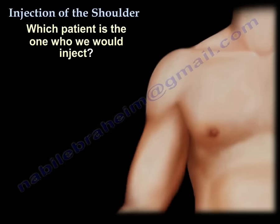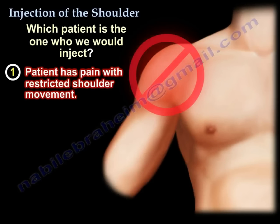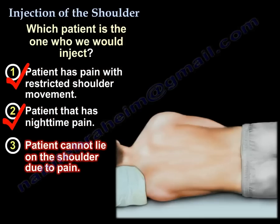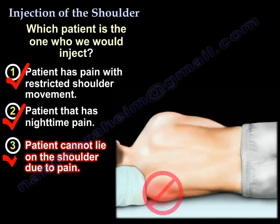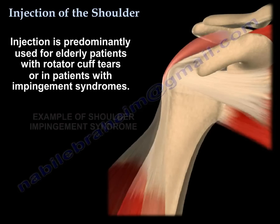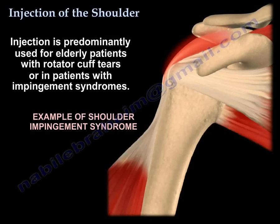So which one do we inject? Patients with restricted shoulder movement, patients that have night pain, patients that cannot lie on the shoulder. Injection is predominantly used for elderly patients with cuff tears and for patients with impingement syndrome.